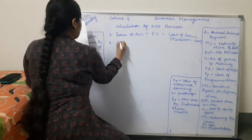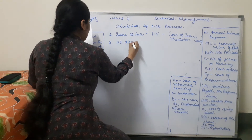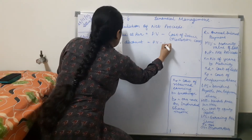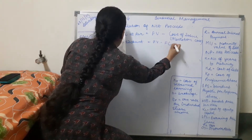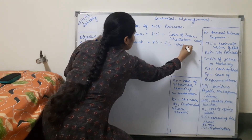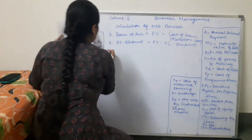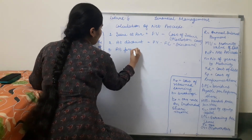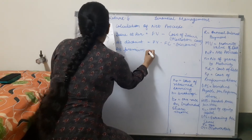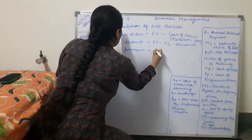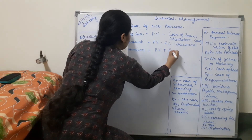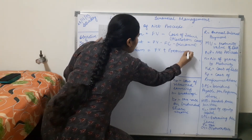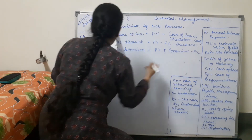Second, when issued at discount, net proceeds is fixed value minus flotation cost minus discount. Third, when issued at premium, net proceeds is fixed value plus premium minus flotation cost.